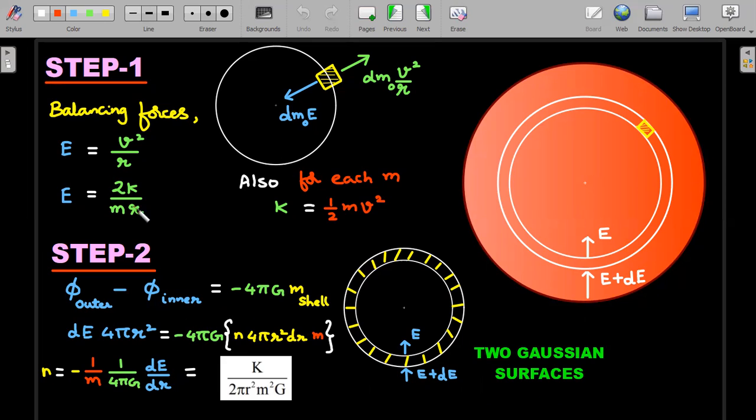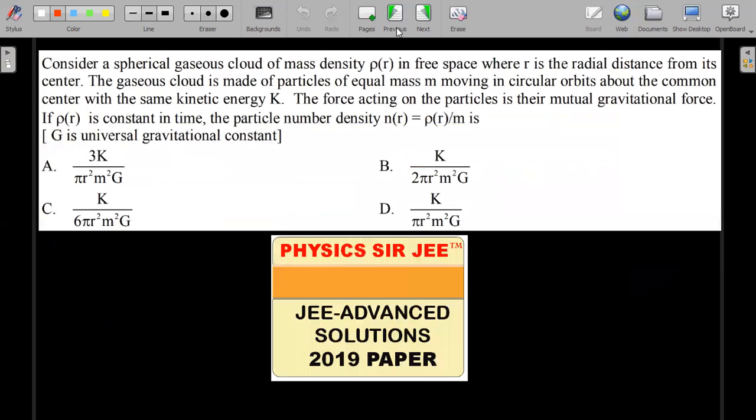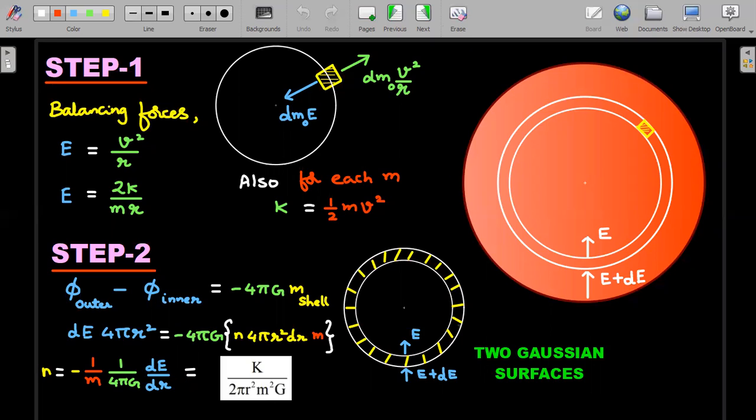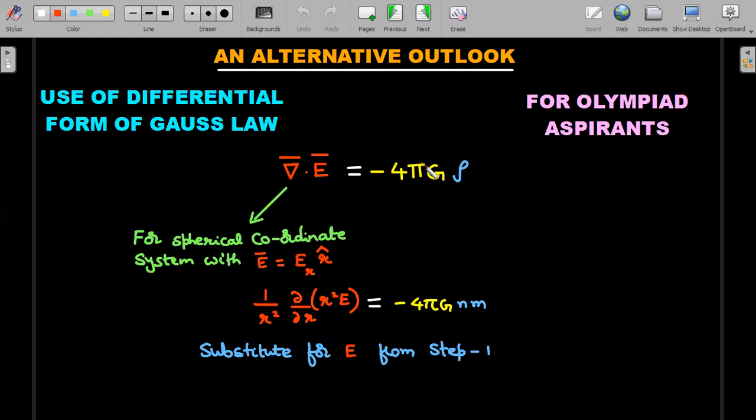I hope it's very clear. The important step here is to be able to write dE × 4πr². It's slightly different from whatever Gauss's law we used to apply in problems we're more familiar with in JEE syllabus. Instead of taking one Gaussian surface, you take two very close Gaussian surfaces and do this. What is the gist of this?